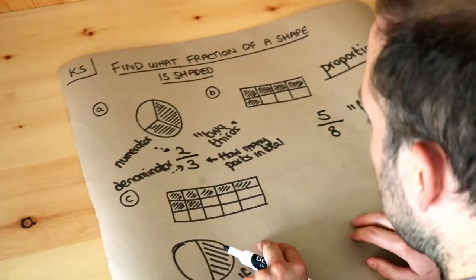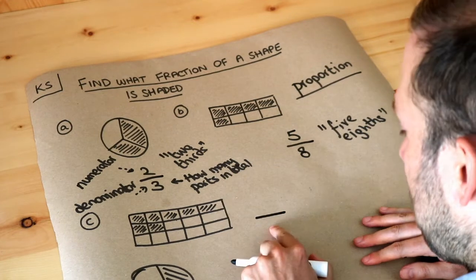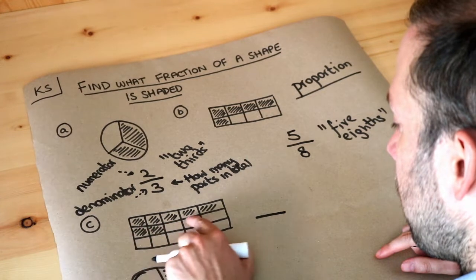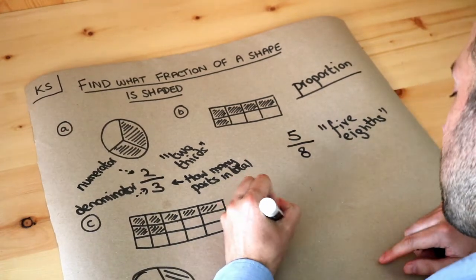And what about this last one, C? Well, the bottom number of our fraction first, the denominator. Well we have one, two, three, four, five per row. One, two, three, four, five. One, two, three, four, five. That's 15 parts in total.